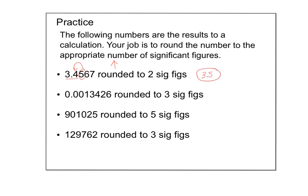For 0.0013426 rounded to three sig figs: leading zeros don't count, so count one, two, three starting at the 1. The next digit is 2, which rounds down, so the answer is 0.001342 — but keep those leading zeros as placeholders. You can't just drop them; going from 0.001342 to 1.342 or 0.1342 doesn't make any sense.